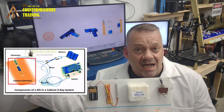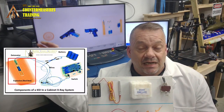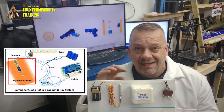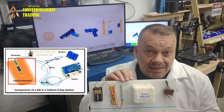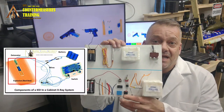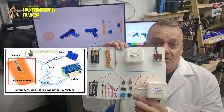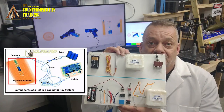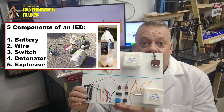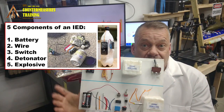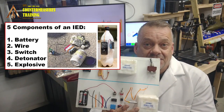When you look at it from the perspective of using an automatic detection red box — how operators use that and what their alarm resolution procedures are — PIES doesn't work for that. We're going to explain that as we get into the five components of an improvised explosive device: Battery, Wire, Switch, Detonator, and Explosive.